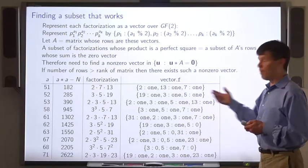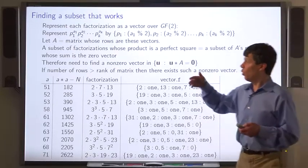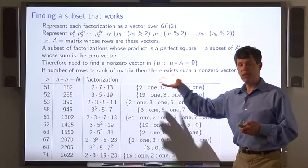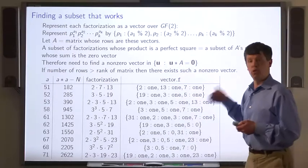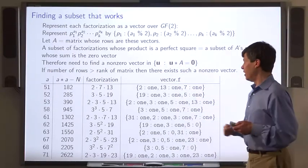So now we have a bunch of GF2 vectors. We build a matrix A whose rows are these GF2 vectors.